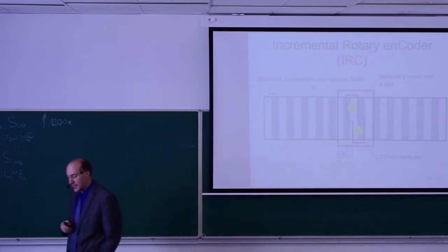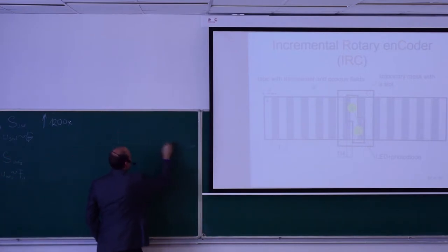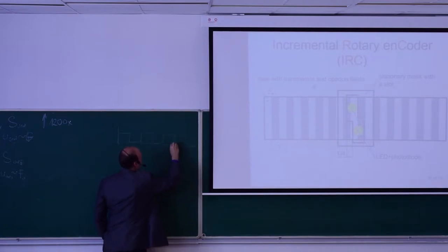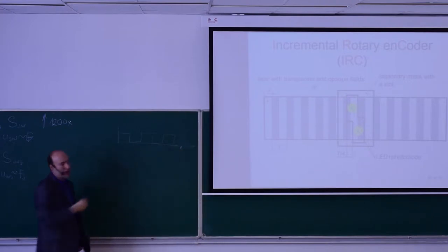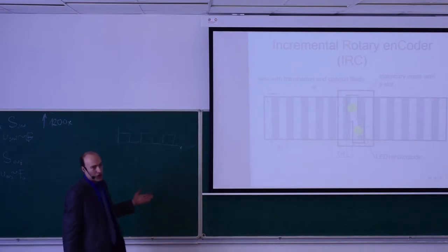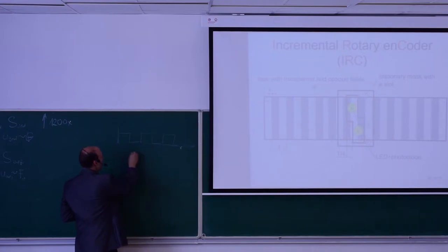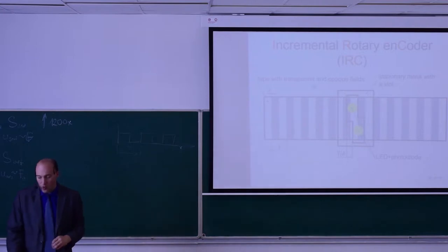The output is a rectangular signal as a function of position X. Starting from a reference position, you can count the transparent and opaque fields. Since you know the pitch T, you can calculate the distance traveled.